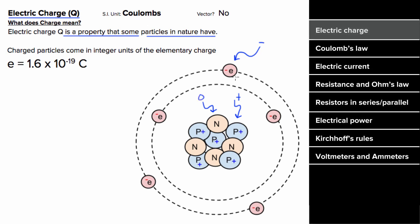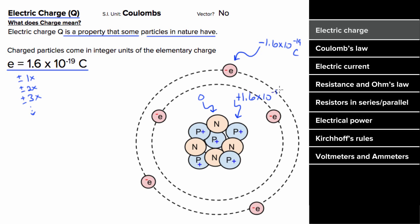All fundamentally charged particles in the universe have charges that come in integer units of the elementary charge. So if you find a particle in nature, it's going to have a charge of one times this number, two times this number, three times this number, and it could be positive or negative. For instance, the electron has a charge of negative 1.6 times 10 to the negative 19th Coulombs, and the proton has a charge of positive 1.6 times 10 to the negative 19th Coulombs.